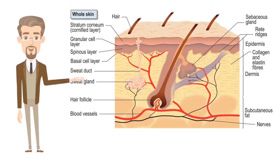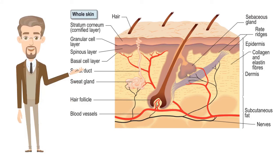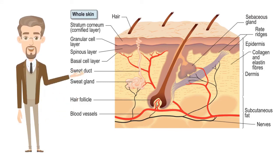The dermis forms the inner layer of the skin and is much thicker than the epidermis, measuring 1 to 5 mm. Situated between the basement membrane zone and the subcutaneous layer, the primary role of the dermis is to sustain and support the epidermis. The dermis is made up of two layers: the more superficial papillary dermis and the deeper reticular dermis.